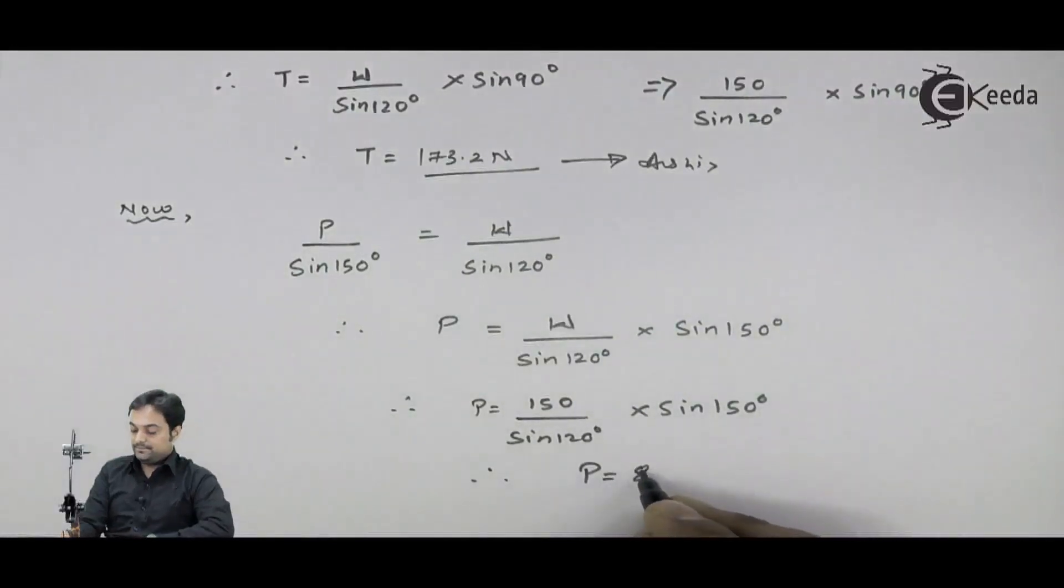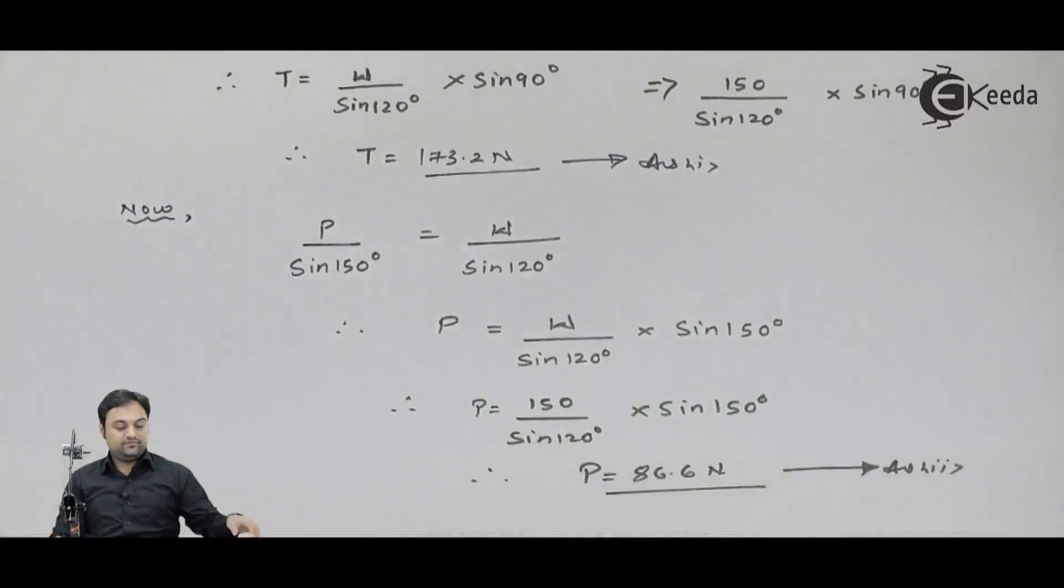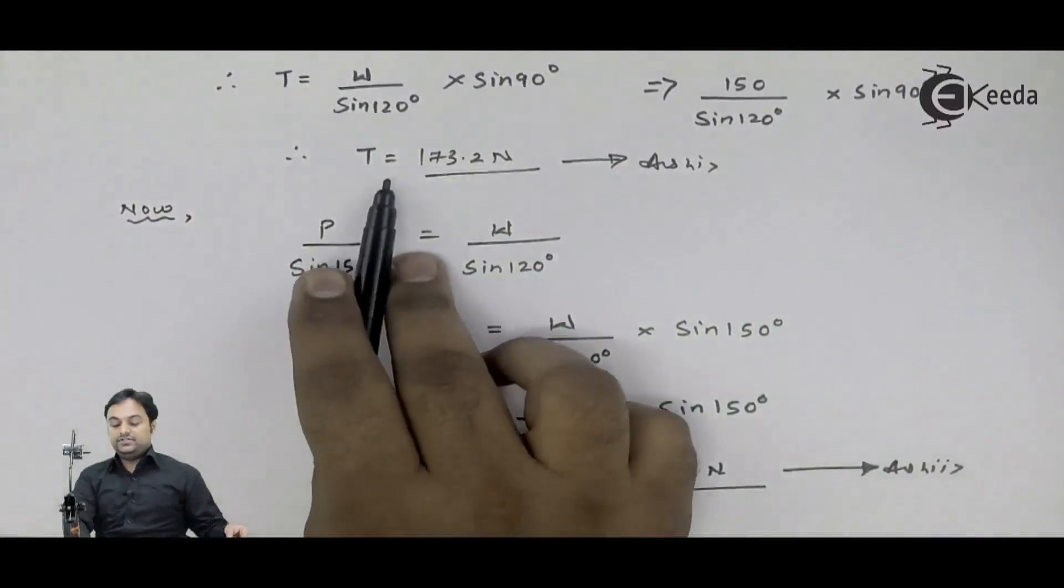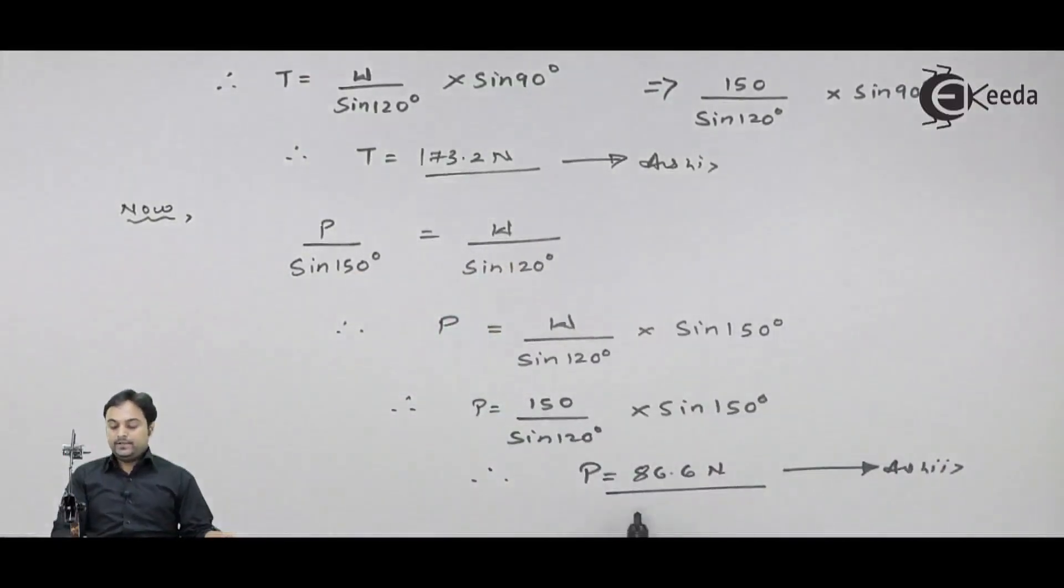This is my second answer. So if we see in the question two things were asked, first to calculate the tension in the string which we have got 173.2 Newton, second the value of horizontal load applied that is 86.6 Newton. We have completed the first problem.